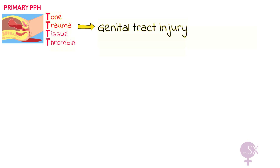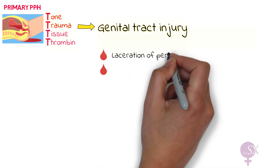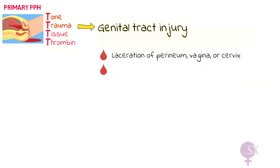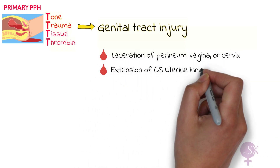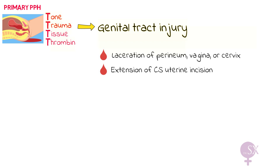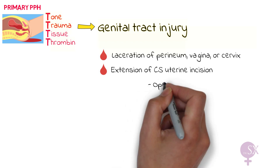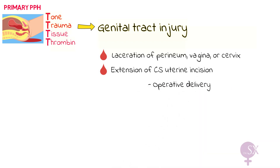The second T is trauma, referring to genital tract injury — trauma to the perineum, vagina, cervix, and uterus. We can have a perineal tear or a cervical tear, and there may also be extension of a cesarean section uterine incision which may bleed profusely. Trauma is more likely with operative delivery using forceps or ventouse, or when delivery is aided by an episiotomy.